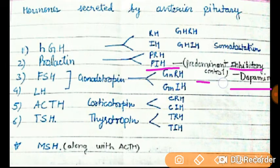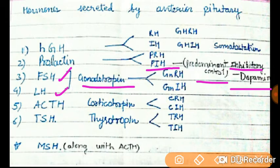The prolactin inhibitory hormone is now also known as dopamine. So prolactin is under inhibitory control. The next two hormones are the gonadotropins — Follicle Stimulating Hormone (FSH) and Luteinizing Hormone (LH) — both under the control of hypothalamic releasing and inhibitory hormones.